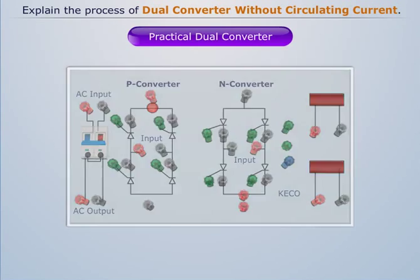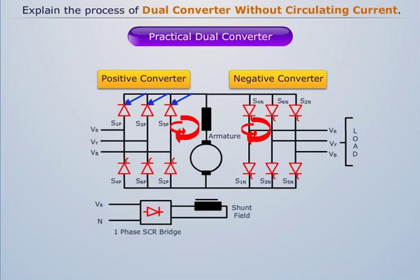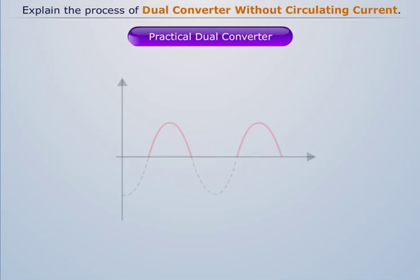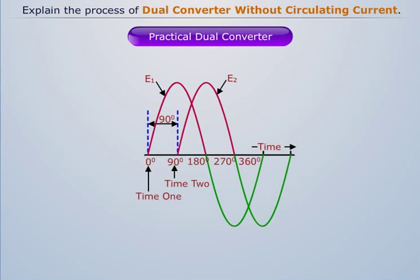So in a practical dual converter, when both the positive and negative converters are working together at different firing angles, then it is noted that their average output is same, but its instantaneous voltage is different and out of phase also.